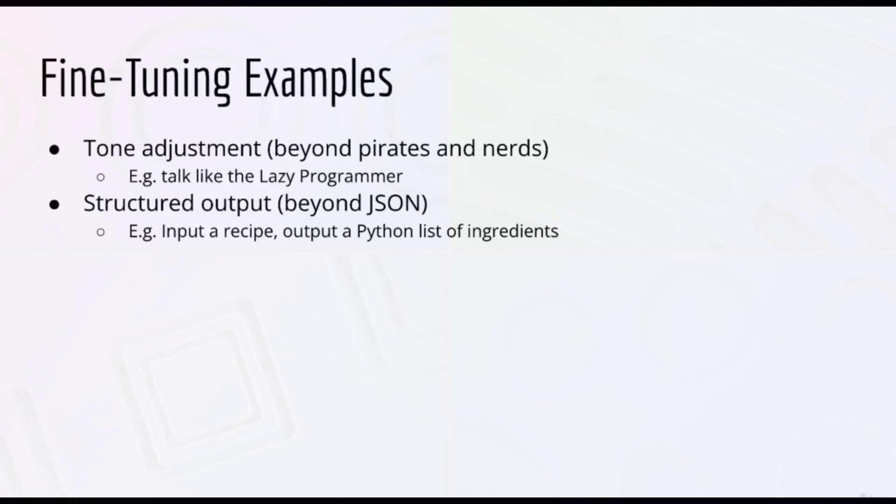Another example is to provide structured output, that is different from the typical JSON that you already know can be produced. For instance, suppose you want to provide a recipe as input, and as output, you want ChatGPT to return a Python list, containing all the ingredients. The base version of ChatGPT might not be able to do that on its own, but by providing many examples, you can fine-tune ChatGPT to reliably produce this output.